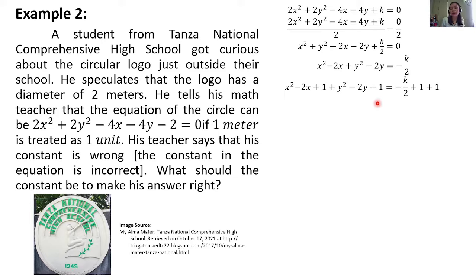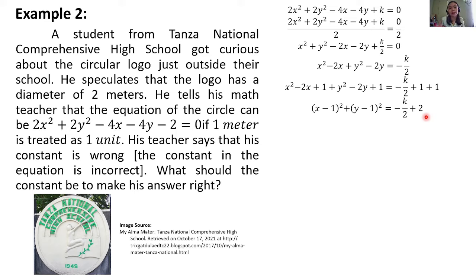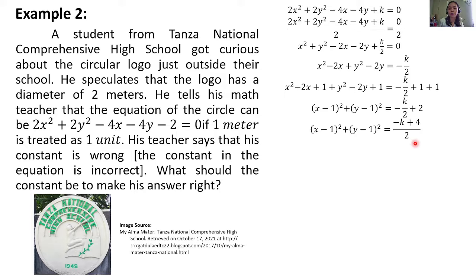Pwede na natin itong isulat as a square of a binomial. We can rewrite this as (x − 1)² + (y − 1)² = −k/2 + 2. Since 2 equals 4/2, we can write the right side with a common denominator: (x − 1)² + (y − 1)² = (−k + 4)/2.